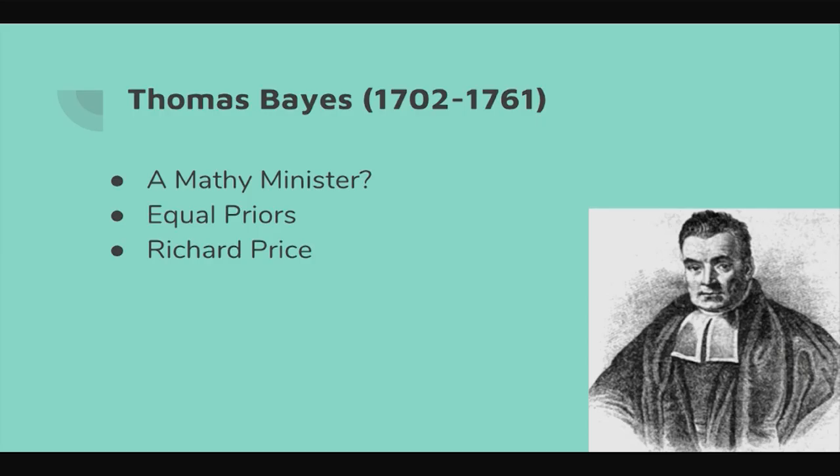Bayes never actually published on Bayes' theorem. He discussed it with the Royal Society of London but never published his paper, though he did write about it. After he died, his friend Richard Price — another minister — went through Bayes' papers, found the theorem, worked on it a bit more, and published it under Bayes' name. Richard Price specifically wanted to apply Bayes' theorem to the existence of God, which is not something Bayes himself had done. Throughout history, other people have tried the same thing, with some saying it proves God and others saying it doesn't.